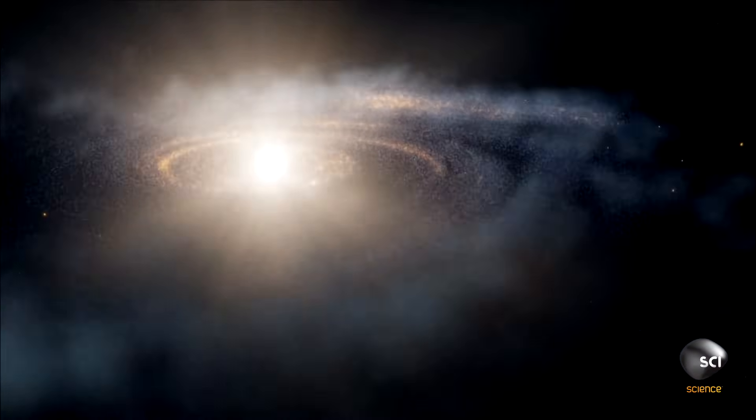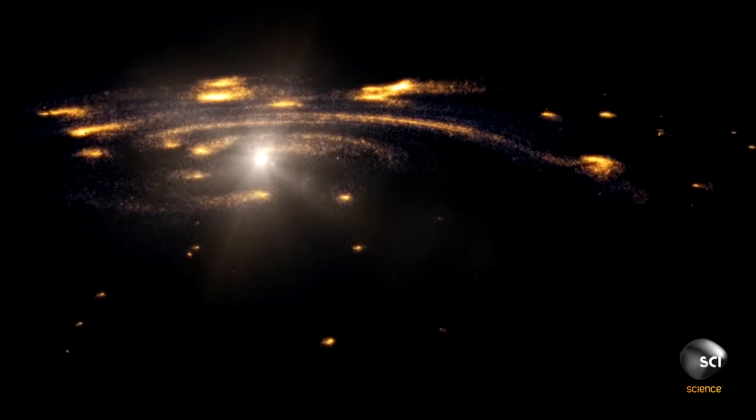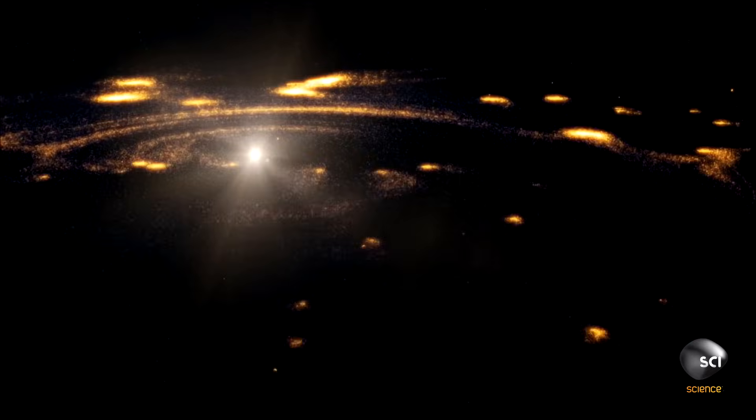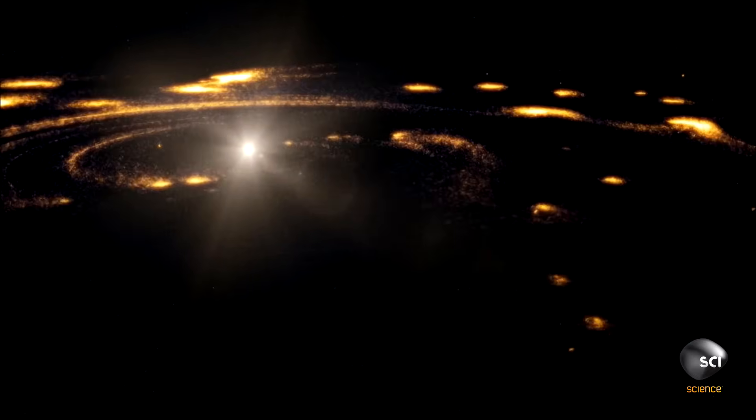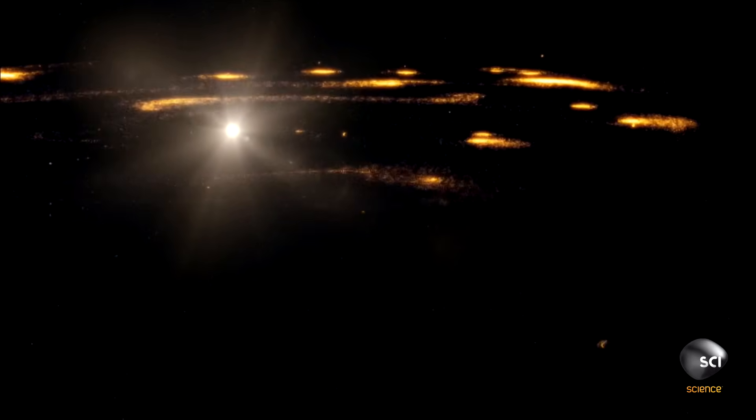4.6 billion years ago our Sun ignites. A cloud of dust and gas circles the infant star. Then gravity gets to work, sucking in gas, dust, ice, and rocks to form the infant planets.